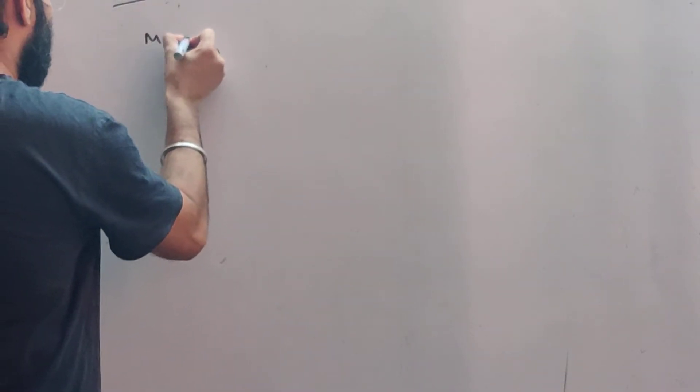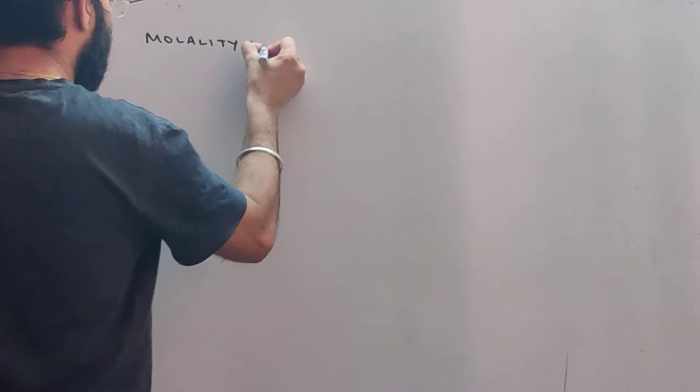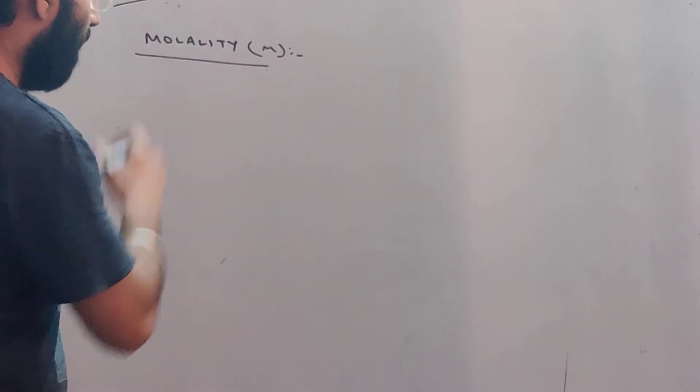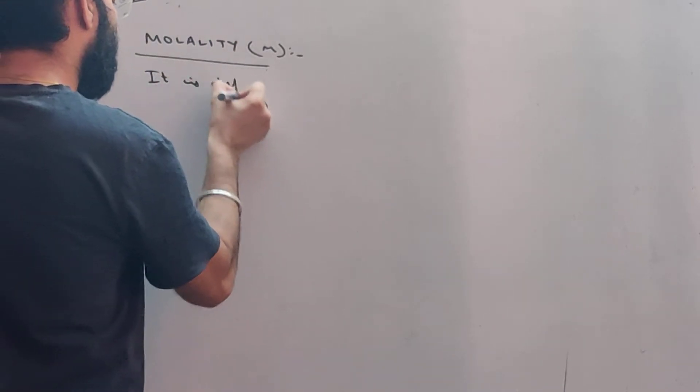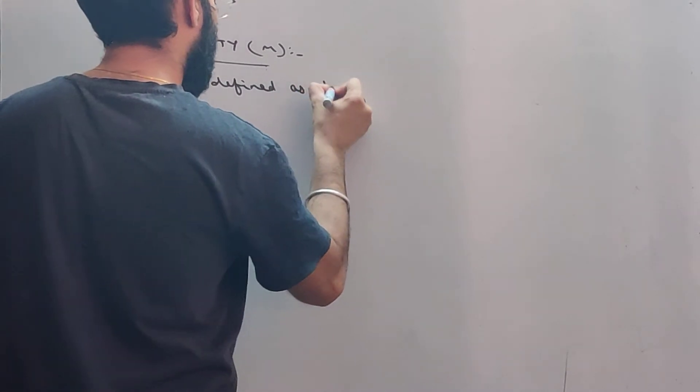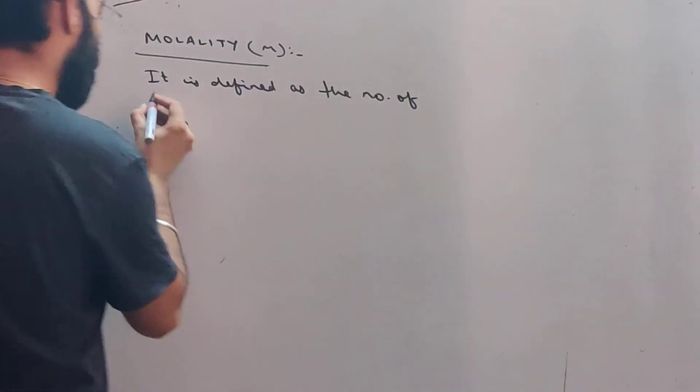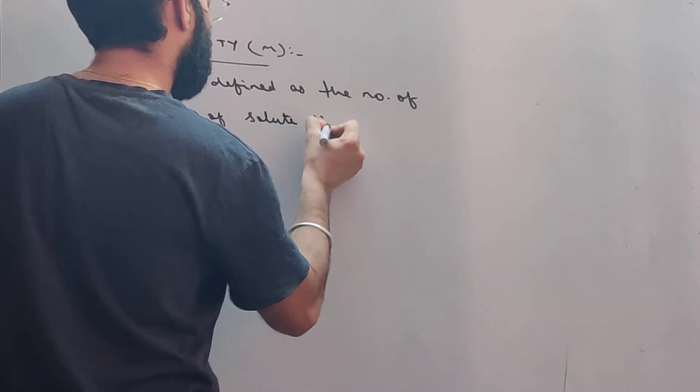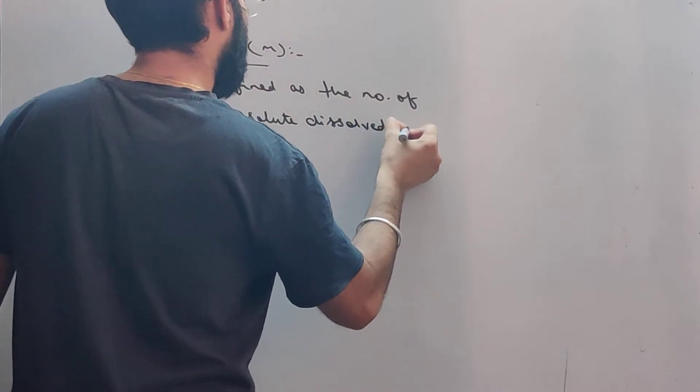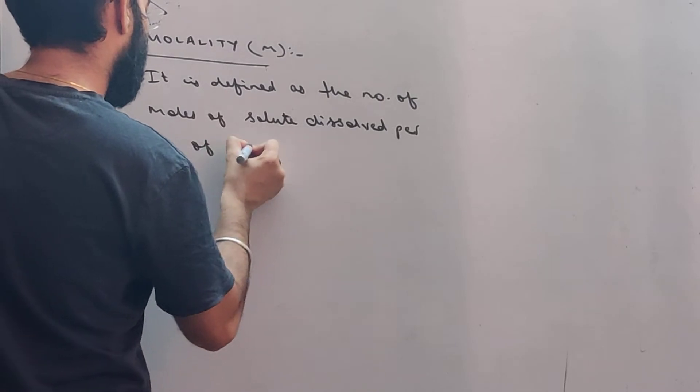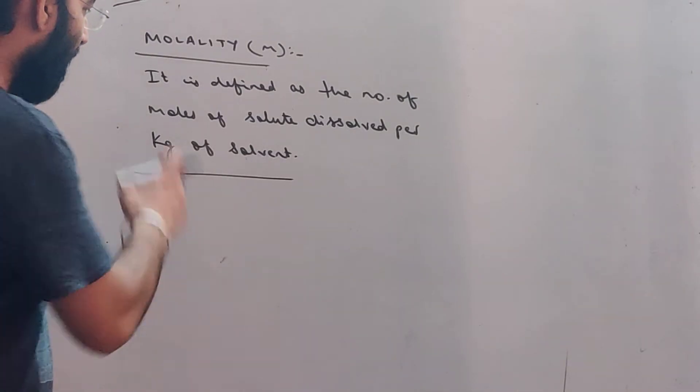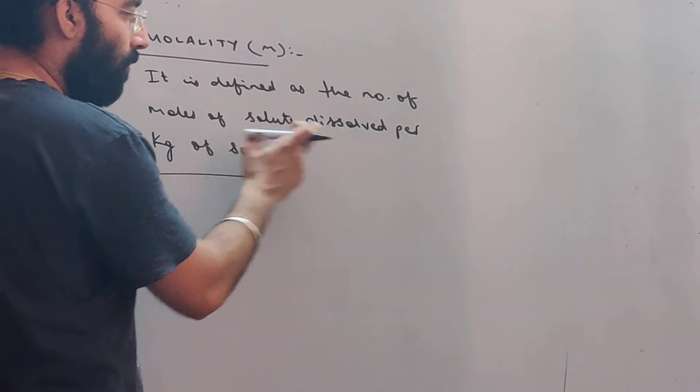Now this molality is represented by small m. Molality is defined as the number of moles of solute dissolved per kg of solvent. See, the definition of molality is the number of moles of solute dissolved per kg of solvent.